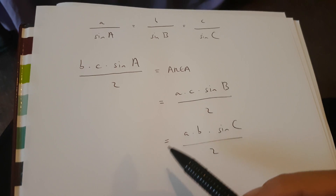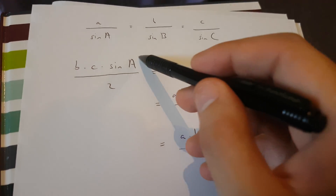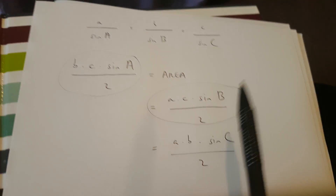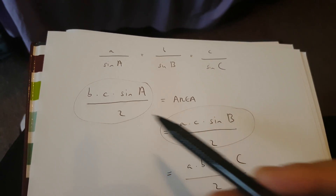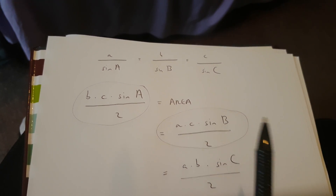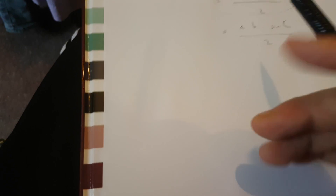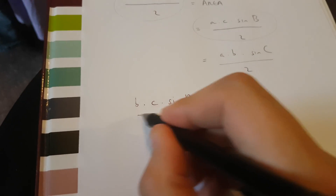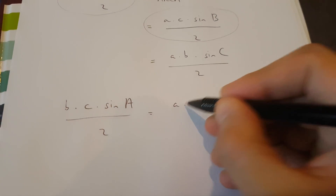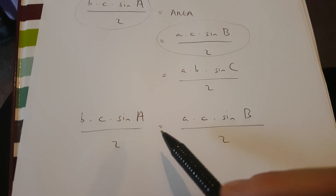To prove that a over sin(A) is equal to b over sin(B), we have to make two of these values equivalent to one another in an equation. They are both equal to the area of a triangle, so we can set them equal: b times c times sin(A) over 2 is equal to a times c times sin(B) over 2.